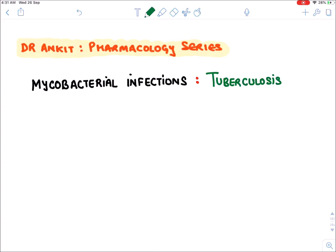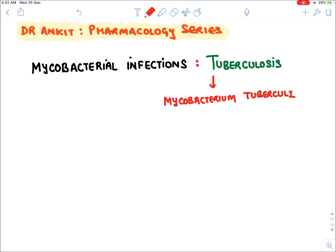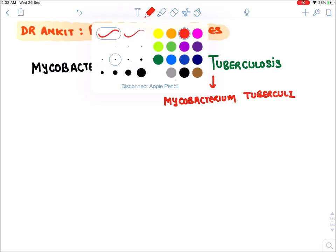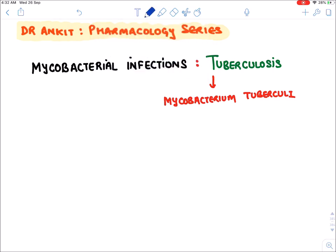Hello everyone, now we will be discussing about mycobacterial infection. The first infection we will be discussing is tuberculosis, which is caused by a bacteria known as Mycobacterium tuberculii. In India, tuberculosis is a very big problem — it's a highly prevalent disease. The treatment of TB in India is given under a national program.